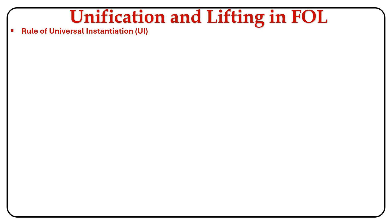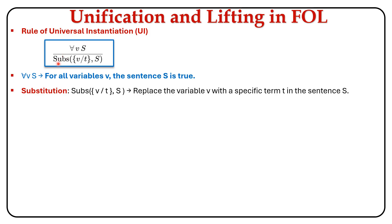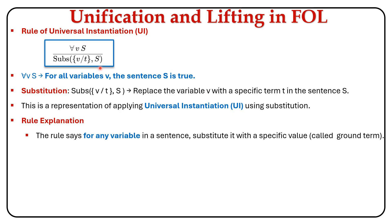Now let's learn about the rules of inference with quantifiers. The first rule is the rule of universal instantiation. For all of variable V, the sentence S should hold true. After applying the substitution — replacing the variable V with the term T in the sentence S — this is called the rule of universal instantiation. This rule says that for any variable in the sentence, we can substitute it with a specific value called a ground term, which helps in deriving conclusions using logical inference.